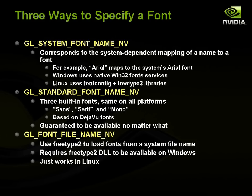There are three ways to specify a font. There's a system font name — whatever the font name on that system is, like Arial — covering whatever TrueType fonts are installed. On Windows we use native Win32 font services; on Linux we expect to access fontconfig and the FreeType 2 library. Another way is with the GL standard font name: three standard fonts available on all platforms based on the DejaVu fonts, guaranteed to be available and essentially built into the driver. Lastly, you can specify a font file name, and if FreeType 2 is available, it will be used — this works on Windows if the DLL is available and just works on Linux.